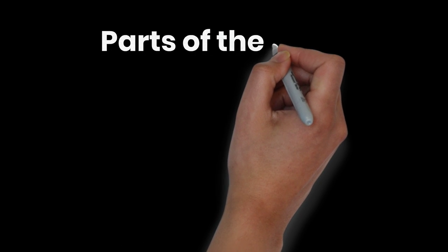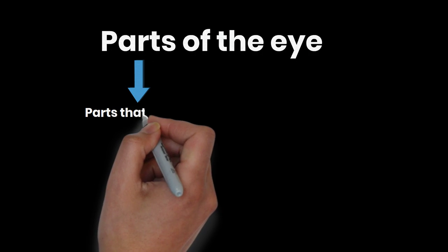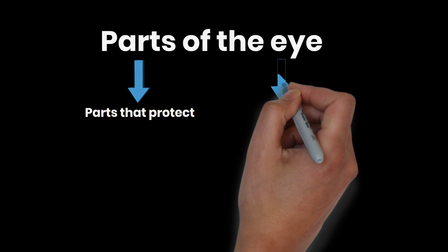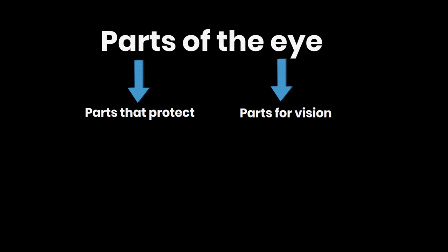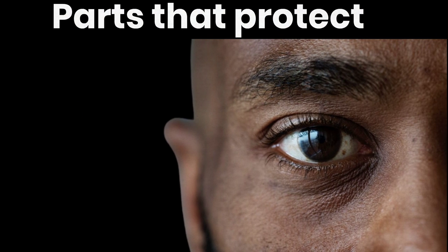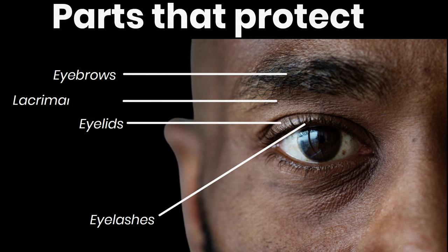Firstly, our eyes are made up of different parts. Some parts protect the eye and other parts are in charge of the vision. The parts that protect the eye are the eyebrows, eyelids, the eyelashes and the lacrimal glands.